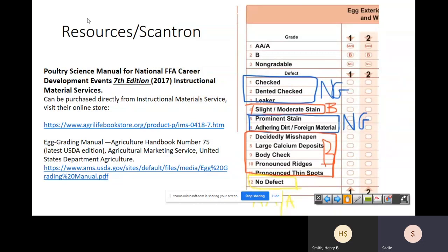Then you have seven through eleven, which are all considered B's: decidedly misshapen, large calcium deposits, body checks, pronounced ridges, and pronounced thin spots. So I get some questions with what a body check is because check up at the top means it's got a crack. So body check, you would think it's a crack too, and it sort of is. What happens with a body check is that it was actually cracked inside the hen and she healed it. So you can still see where it's at. It usually occurs around the equator of the egg or the center of the egg, and it's going to be like circular. Sometimes it'll make the egg actually raised, like the shell will actually look a little raised. I have a couple of pictures that I will show you when we go through the pictures of the egg in a minute.